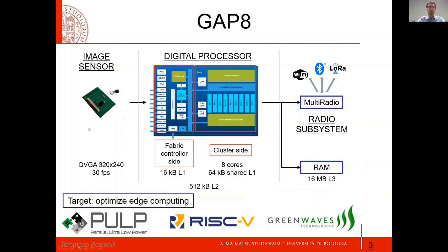Let's talk about the platform. We have a QVGA image sensor, 320 by 240 at 30 frames per second. We also make use of GAP8, which is a PULP-based MCU made by GreenWaves, a startup. It is based on nine cores: we have a fabric controller, standard load store cores with 16 kilobytes of internal cache, and the cluster which has about 64 kilobytes of internal cache.